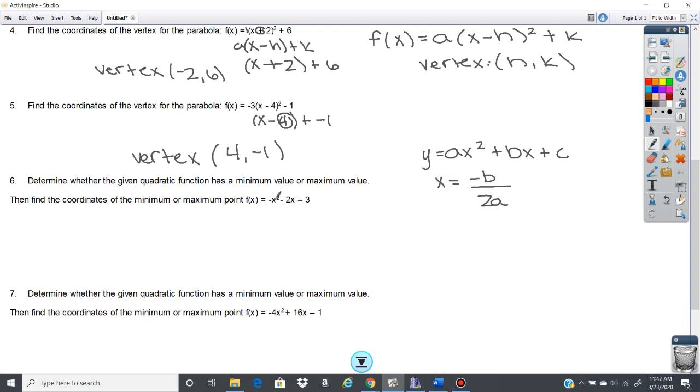So in this case, you have an a of -1, a b of -2, and a c of -3. So let's go ahead and plug those in. So we have x equals negative b, negative (-2) over 2 times (-1). So it's going to be a positive 2 over negative 2, which is going to give us -1.